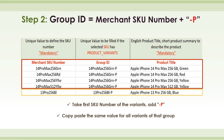To format Group ID, take the first SKU number in the group and add a dash P, then copy-paste the same value for all variants in that group.